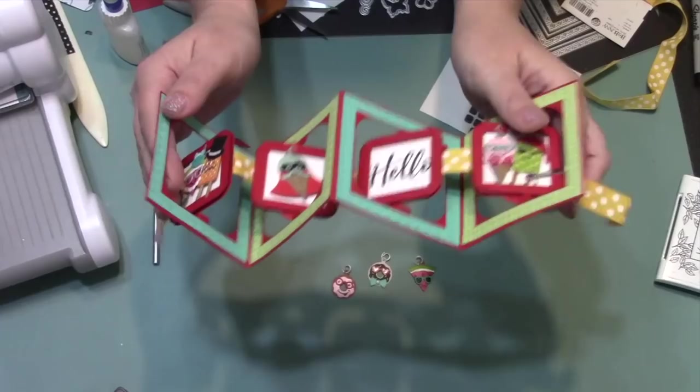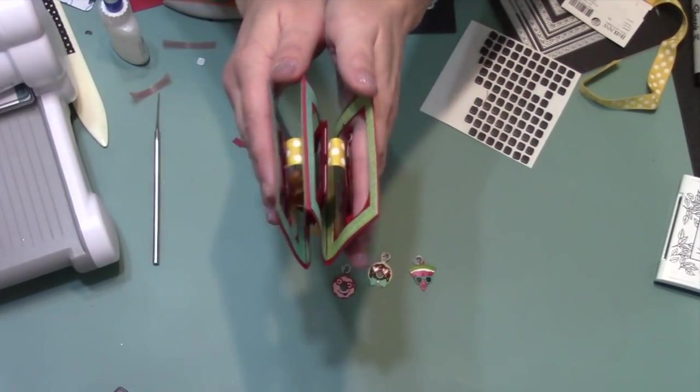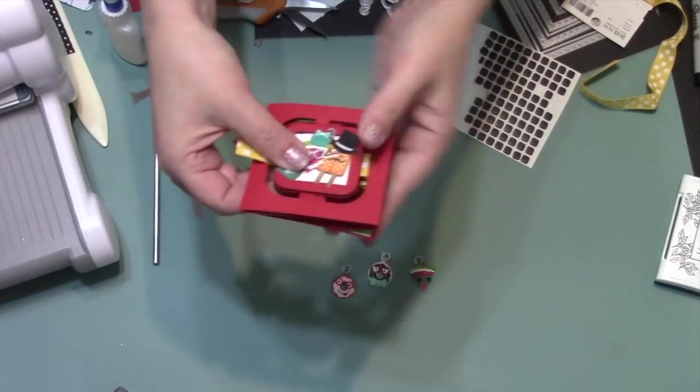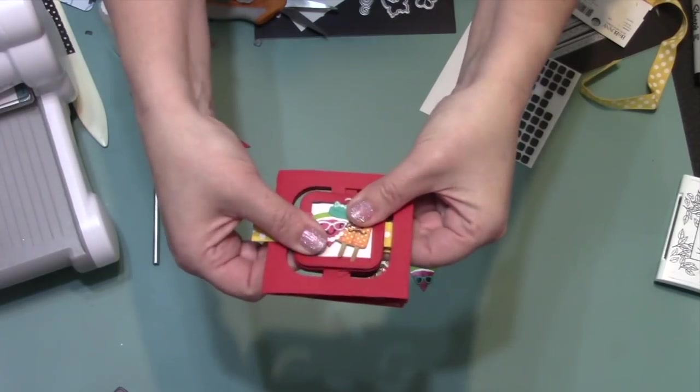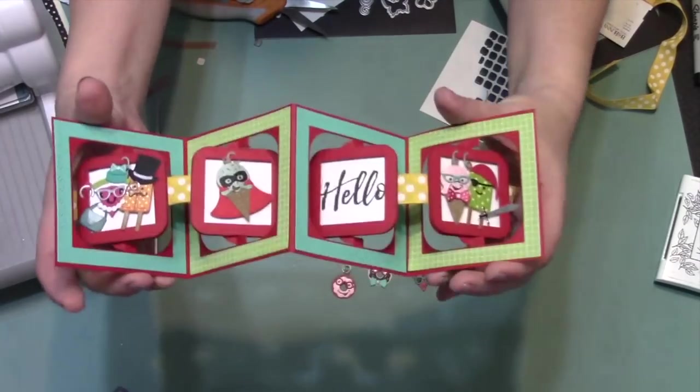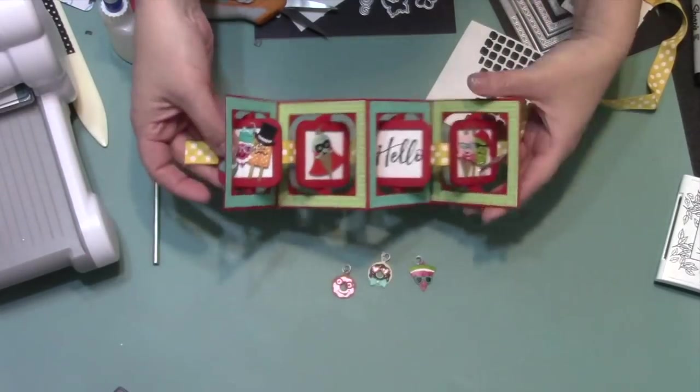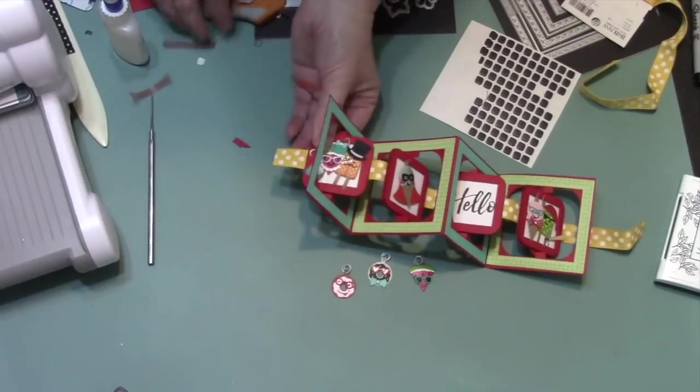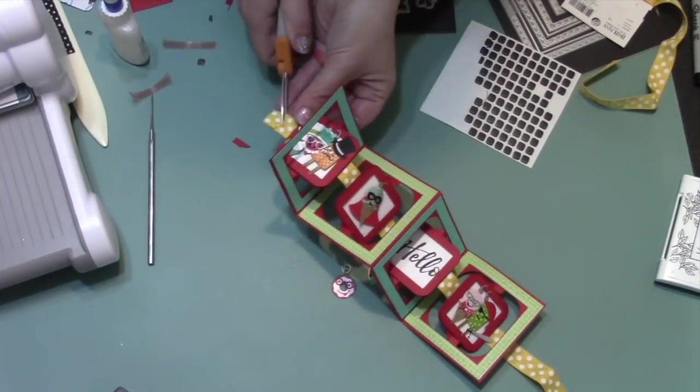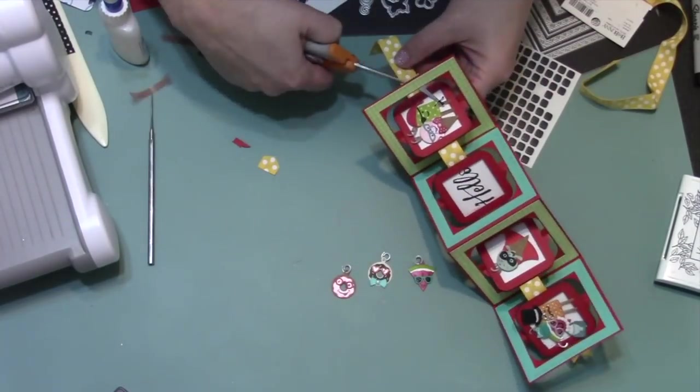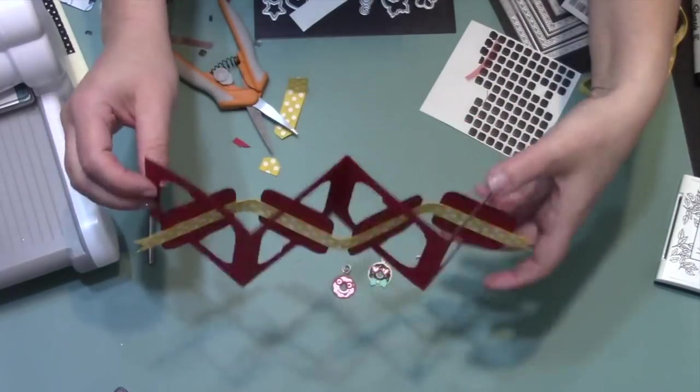So the outer ones are going valley, mountain, valley, and the inner ones are going mountain, valley, mountain. That way that first page will spin around and become the front of the album as well. Then I like to just open and close it a couple times, make sure that I really like the way it's looking and operating. Then I'll trim the ends of the ribbon into decorative fishtails.